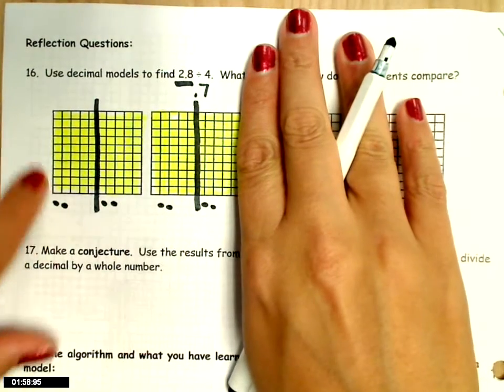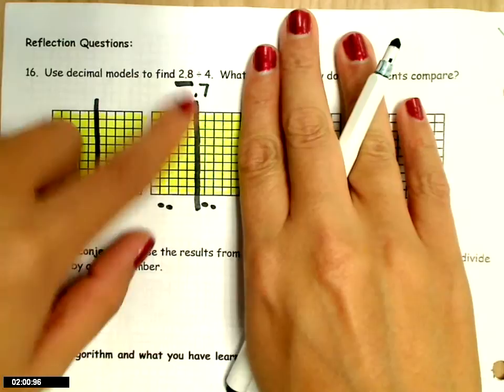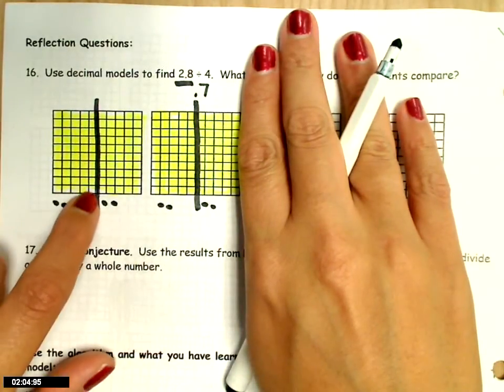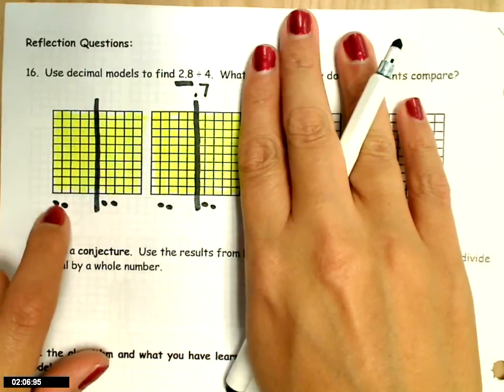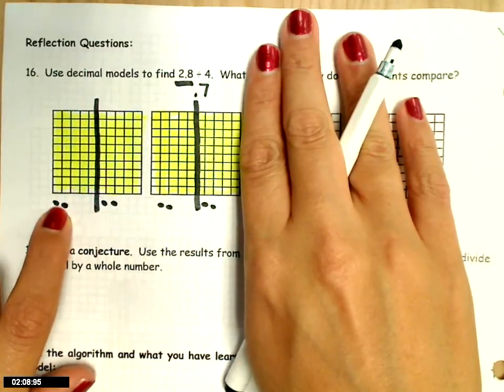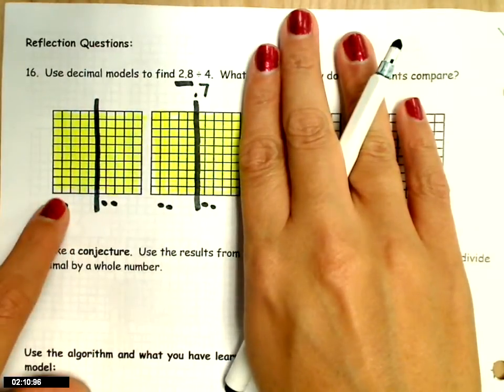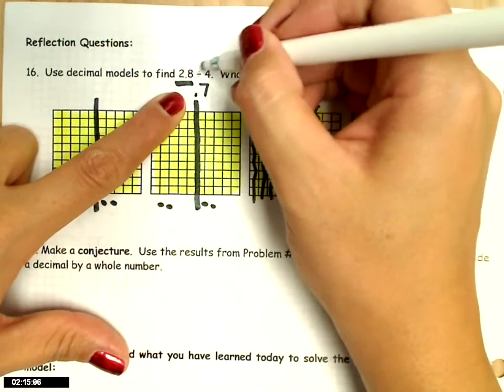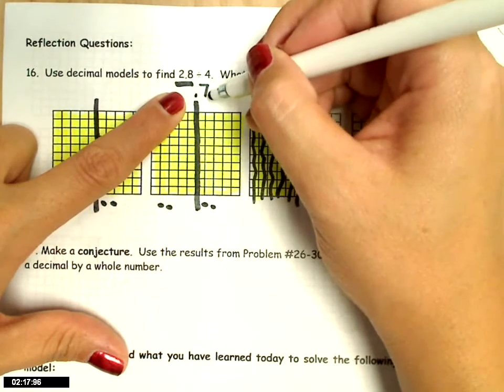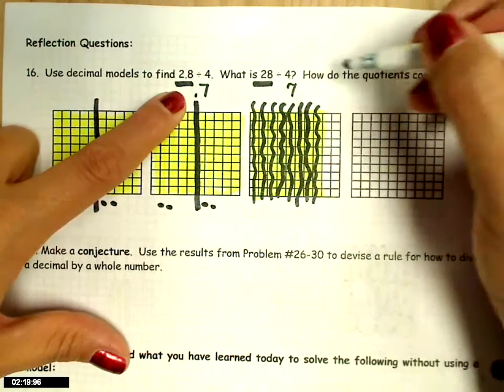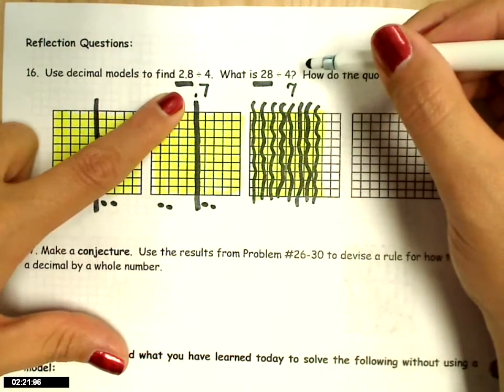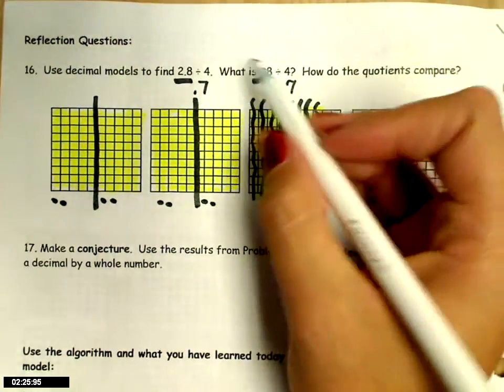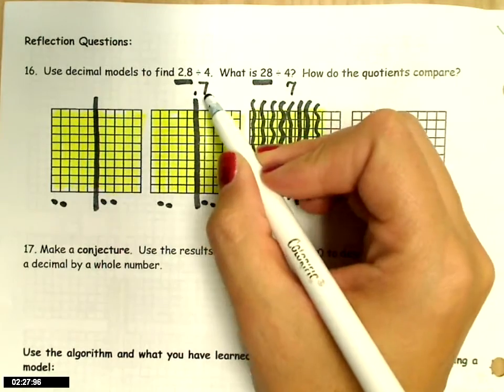So 2 and 8 tenths divided by 4 is 7 tenths, or 0.7. And the answer to 28 divided by 4 is 7. So how do they compare? Well, one of them has a decimal, and the other doesn't. This is a whole number with no digits after my decimal place. And here I have a part, right, a decimal, with one number after my decimal place. And notice, I also have one number after my decimal place here in 2.8.